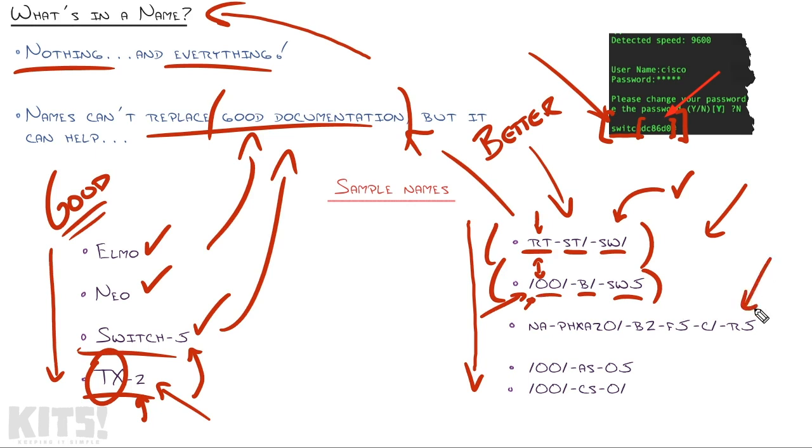This might be a large organization. Here's how this might read. This switch is in North America, Phoenix, Arizona, site number one. On that campus, it's building two, floor five, closet one, rack five of that closet. Now that's intense.